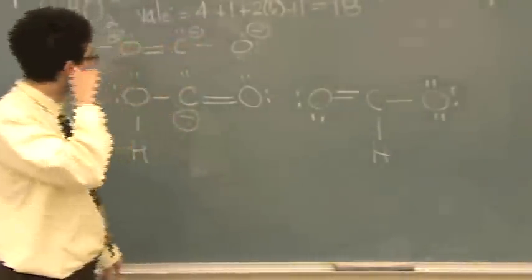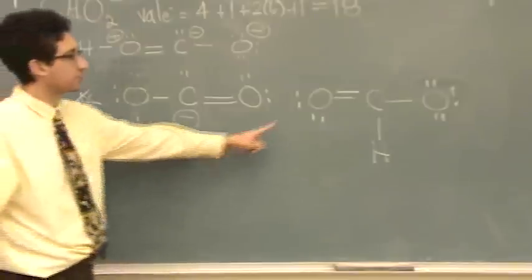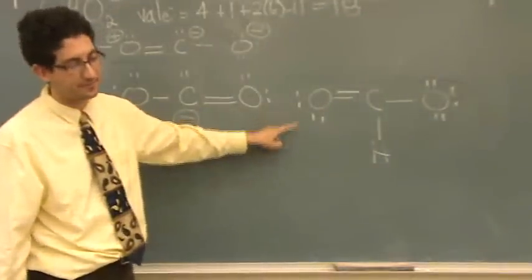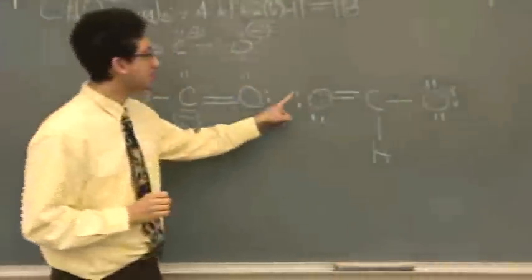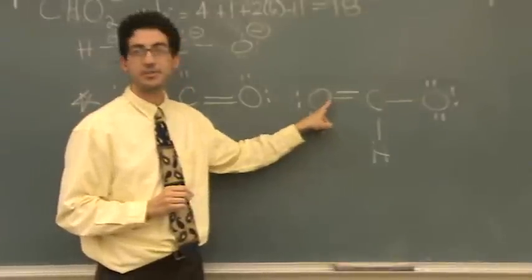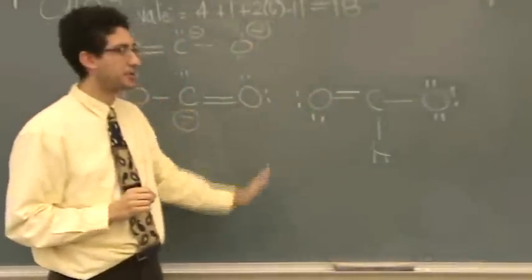Now, let's look at the formal charges. What's the formal charge here? Zero. Zero. Zero. Okay. It should be 6. You count 1, 2, 3, 4, 5, 6. It should be 6 because it's a 6 column in the periodic table.